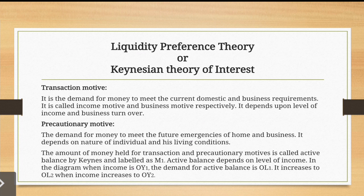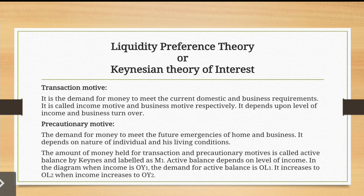The amount of money held for the transaction motive and precautionary motive together is called the active balance by Keynes, and is labeled as M1. Active balance depends upon the level of income: the higher your income, the more active balance you maintain, and the lower your income, the less your active balance.